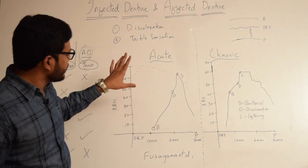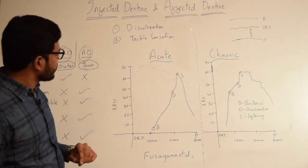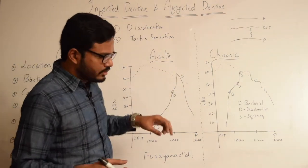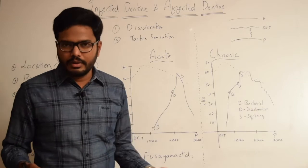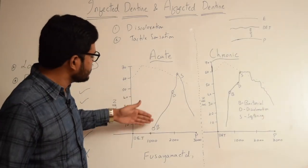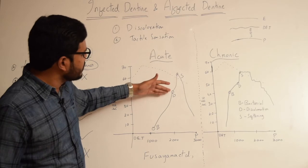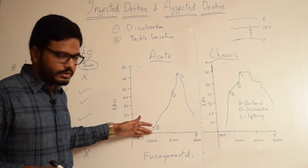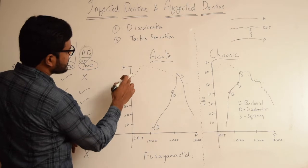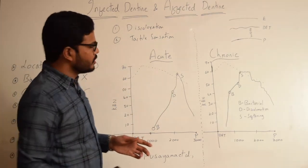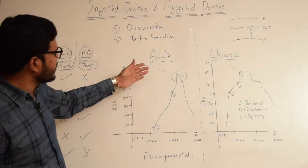Looking at the hardness values: the hardness value of the softening front — the moment we hear softening front, we assume its hardness is the least. It is less compared to normal dentin, but not lesser compared to the discoloration front and bacterial front. The softening front hardness value is actually greater compared to the discoloration front and bacterial front. The reason we call it the softening front is because its hardness value is less compared to that of normal dentin, indicated by the dotted lines.